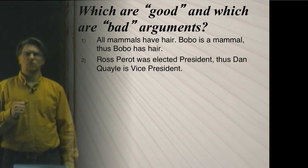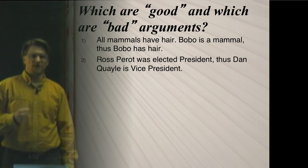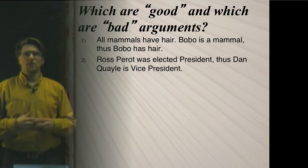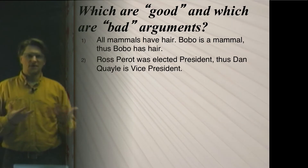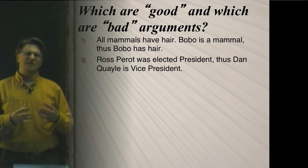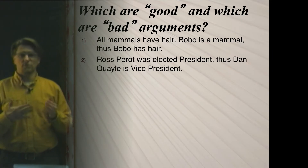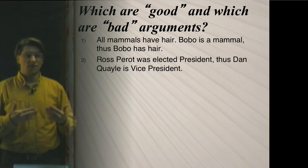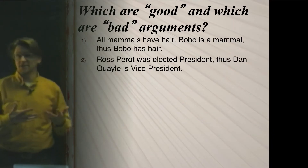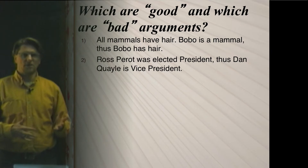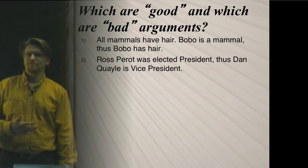Here's another example: Ross Perot was elected president; thus Dan Quayle is vice president. You might know your American political history and know about Ross Perot and Dan Quayle, but I think many people, when they think about this one, are inclined to say that this is probably some kind of bad argument — either because they know that Ross Perot and Dan Quayle didn't run on the same presidential ticket, or just realizing that one person being elected president doesn't necessarily mean another person would be vice president.